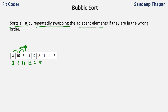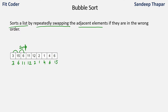Then we'll compare 15 and 1. Since 1 is less than 15, 15 should come later, so we'll swap these. Then we'll compare 15 and 4. Again 4 is smaller, so 4 should come first and we'll swap them — 4 will come here and 15 will come in place of 4. Then we'll compare 15 and 6. Since 6 is smaller, 6 will come before and 15 will come at the end. So after the first round the array values are 3, 6, 11, 12, 2, 1, 4, 6, and 15.